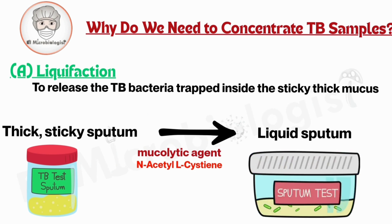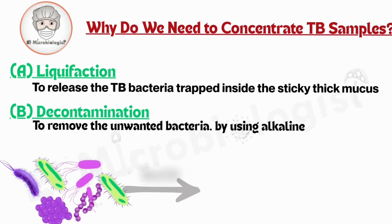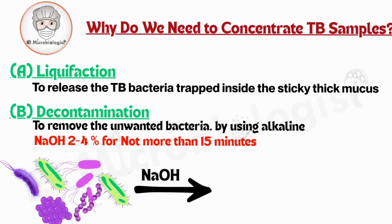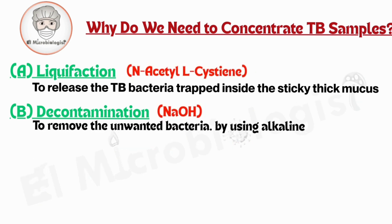Step 2: Decontamination. Next, we need to get rid of the noise — the unwanted bacteria. We use a chemical, usually something alkaline, to kill off everything except TB. Why? Because mycobacteria are more resistant to harsh conditions than most bacteria. But here's the trick: if we overdo it, we kill the TB too. So the timing and concentration have to be just right.